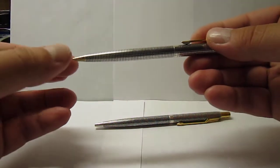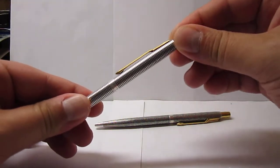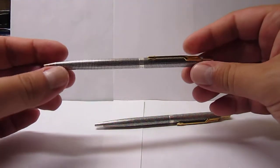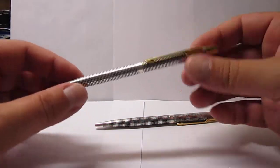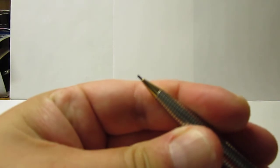Here on the pencil we have the tip, the pocket clip and the top button but this is not the clicker. Contrary as one would imagine, this pencil actually works by twisting. So there we go.